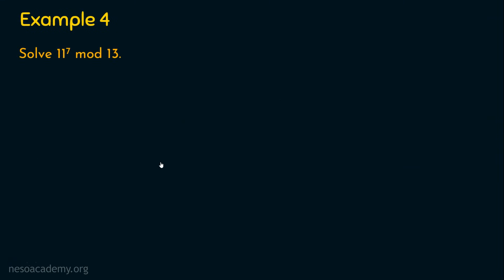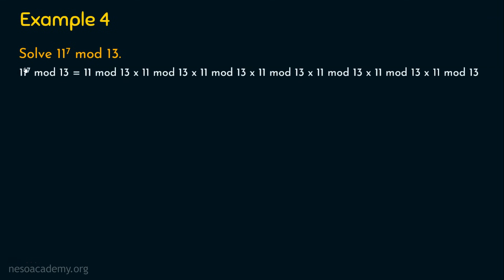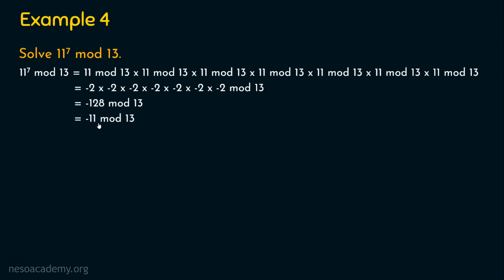Let's move on to the last example of the day — example 4. The question is: solve 11 power 7 mod 13. I am going to use a different strategy here. 11 power 7 mod 13 can be written as 11 mod 13 multiplied 7 times. The result of 11 mod 13 is 11 or minus 2; minus 2 is smaller. So using minus 2 seven times gives minus 128 mod 13. Then minus 11 mod 13 can be represented as positive 2, since minus 11 plus 13 equals plus 2. So the answer for 11 power 7 mod 13 is 2.